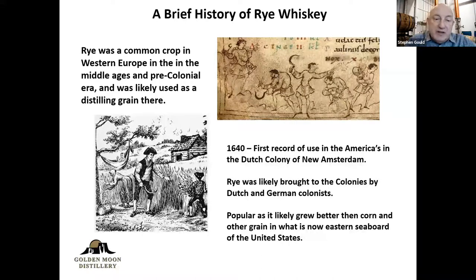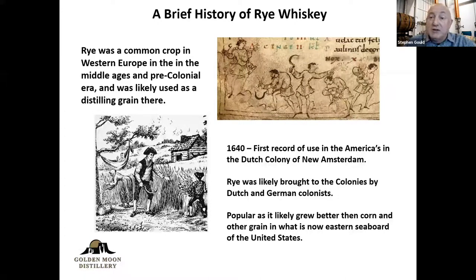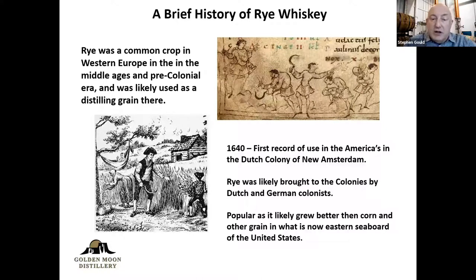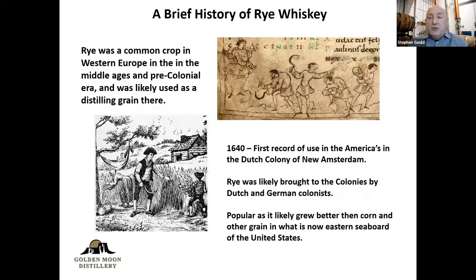Rye whiskey is typically associated with whiskey produced in the United States. The first recorded use in the Americas was in the Dutch colony of New Amsterdam — what we would now call New York — where the governor of that colony ordered the distillation of rye grain they were growing into spirit for consumption. That rye was likely brought to the colonies by Dutch and German colonists. We know the rye that was cultivated where we have records of the first distillation was cultivated in what was a Dutch colony.